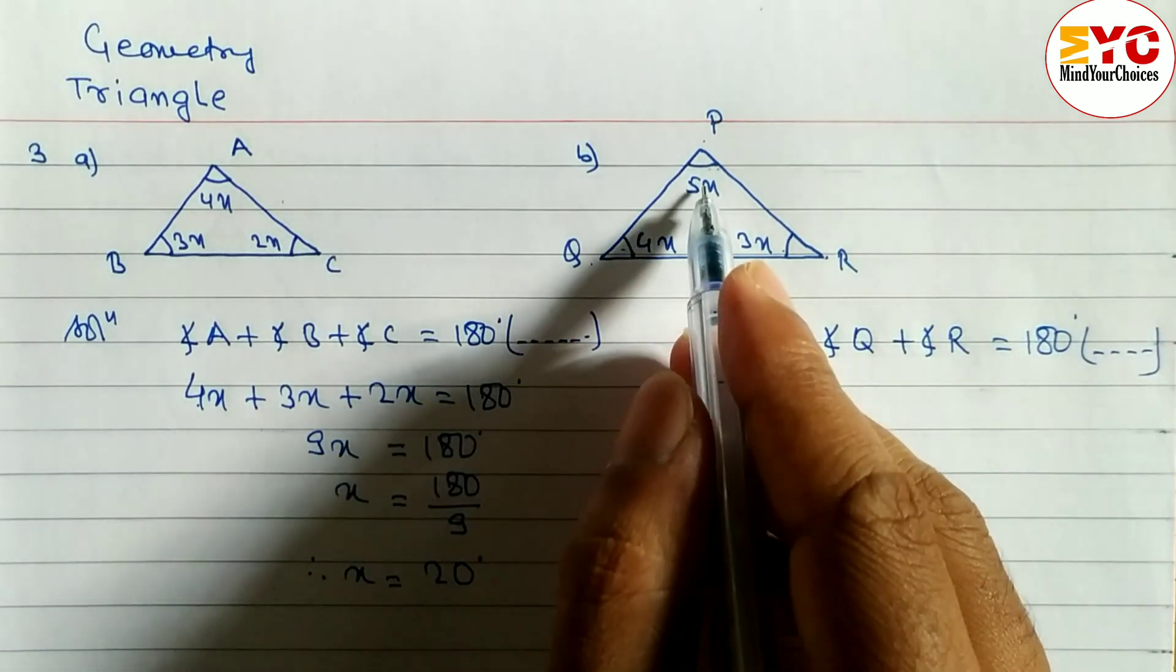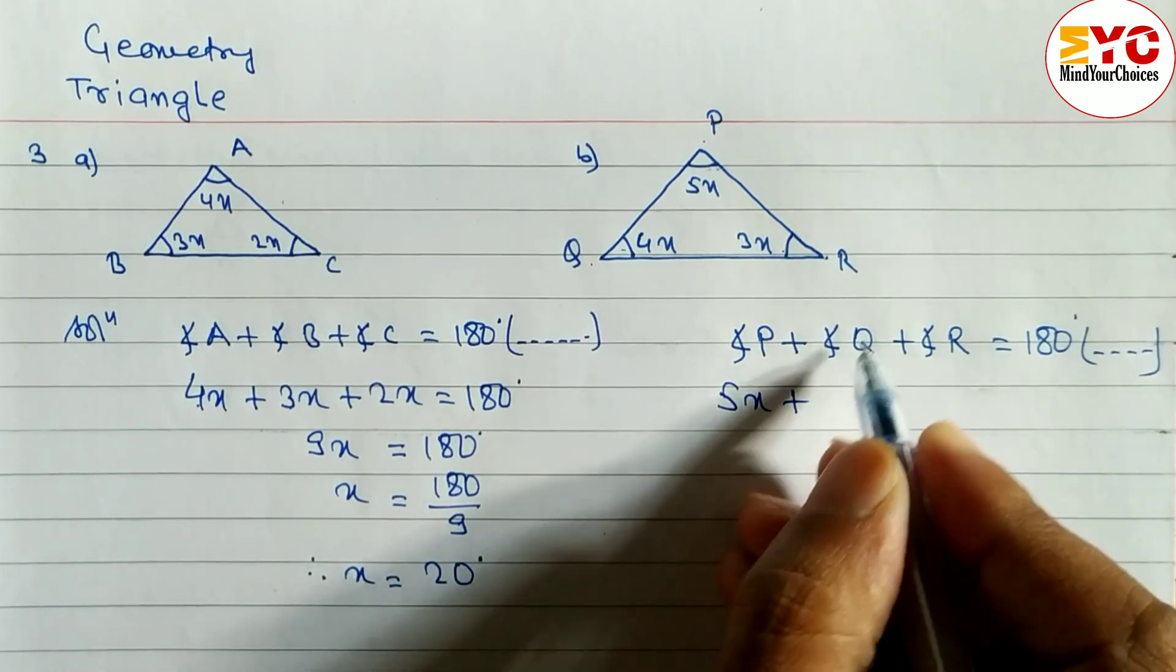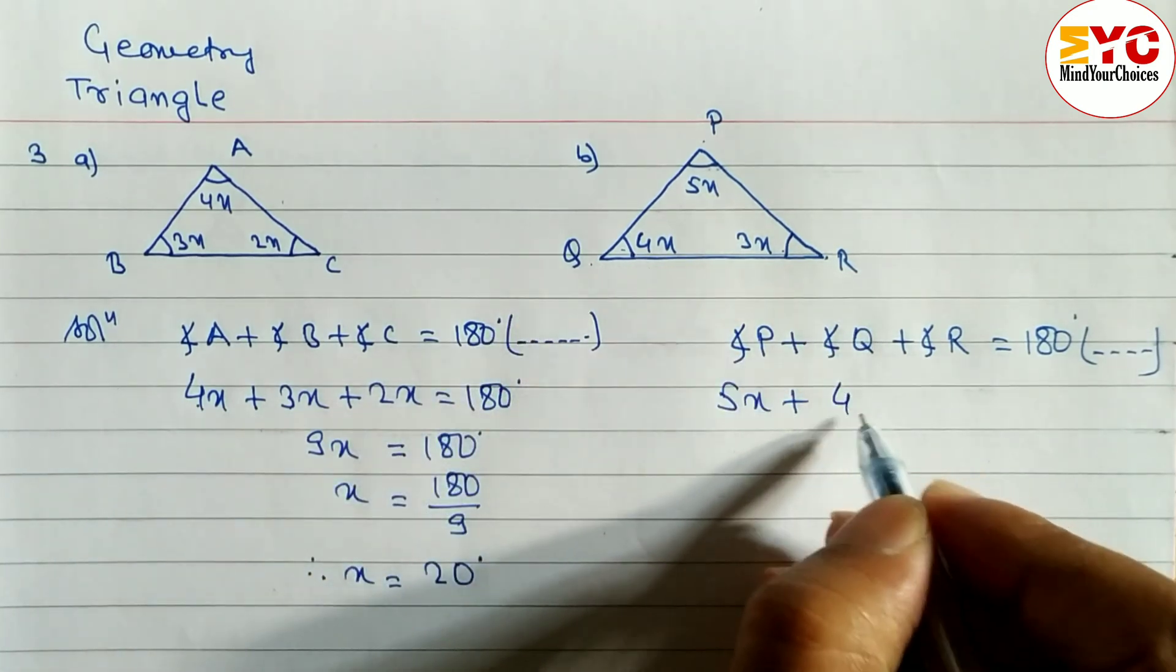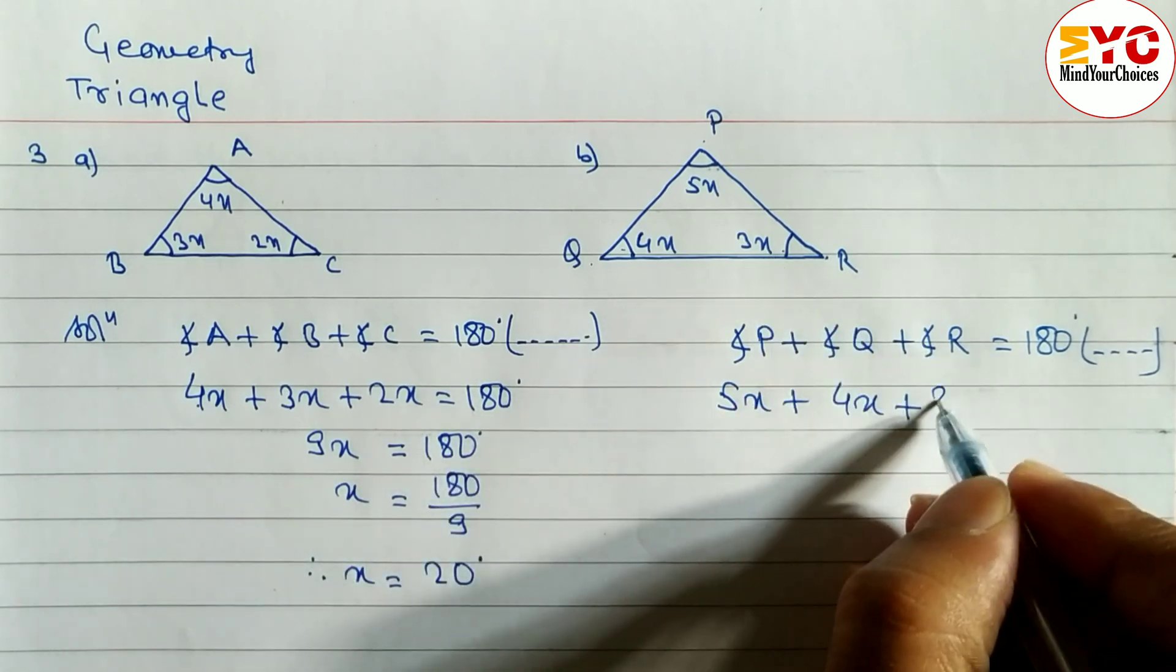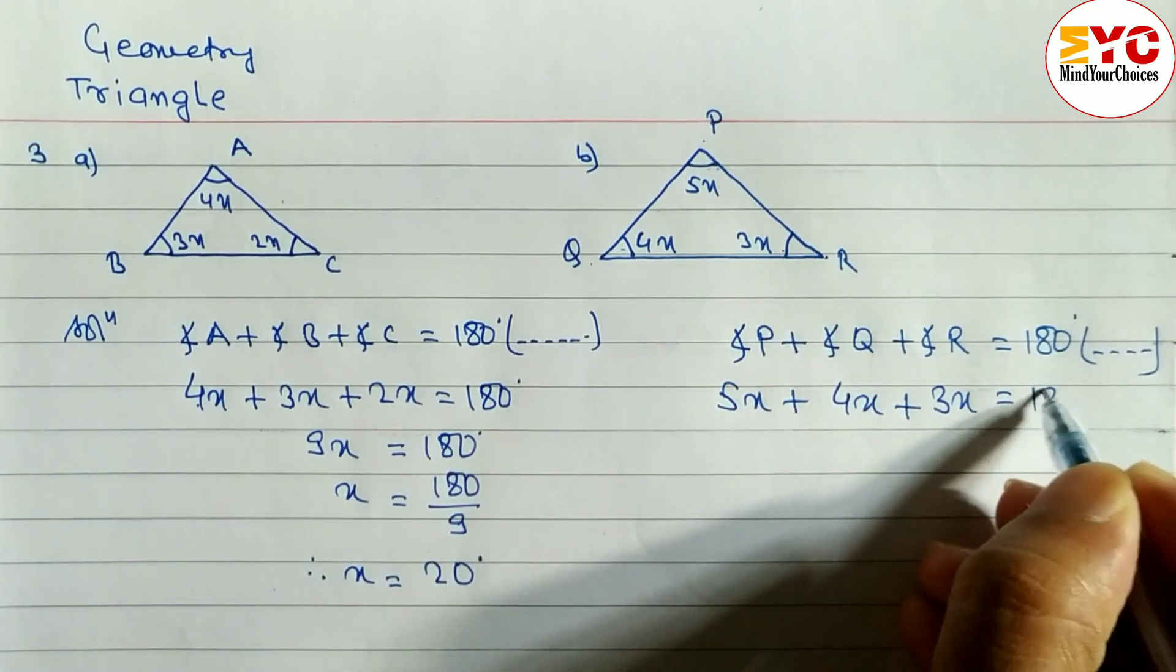What is the value of p? Angle p? 5x. So we have to write here 5x plus angle q. What is here? 4x. So 4x we have to write angle r. What is the value of angle r? 3x. So 3x is equal to 180.